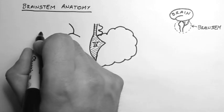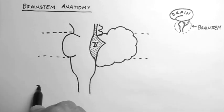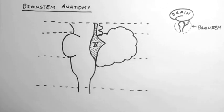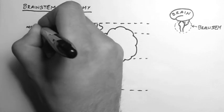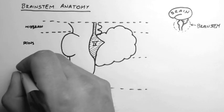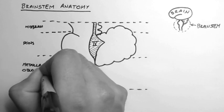Now I'll split the brain stem up into its appropriate sections. Here we have the midbrain. Below that is the pons. And below that is the medulla oblongata.